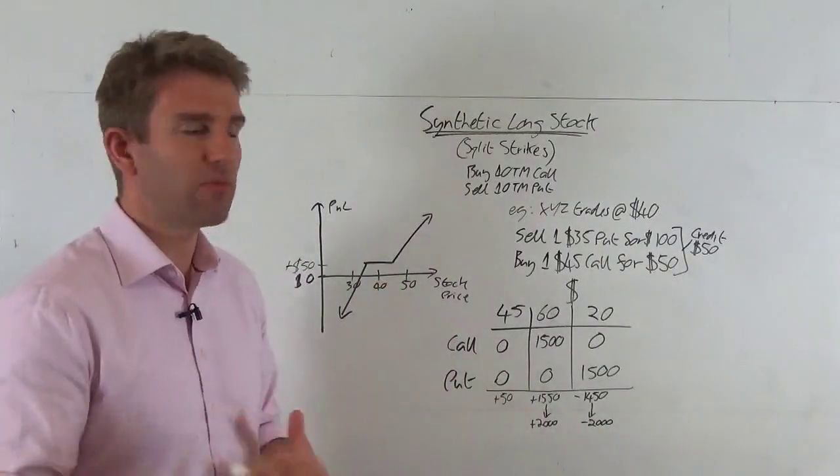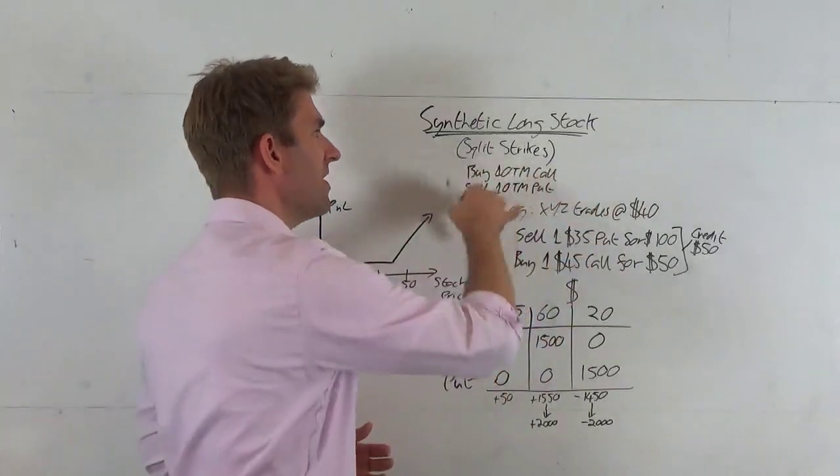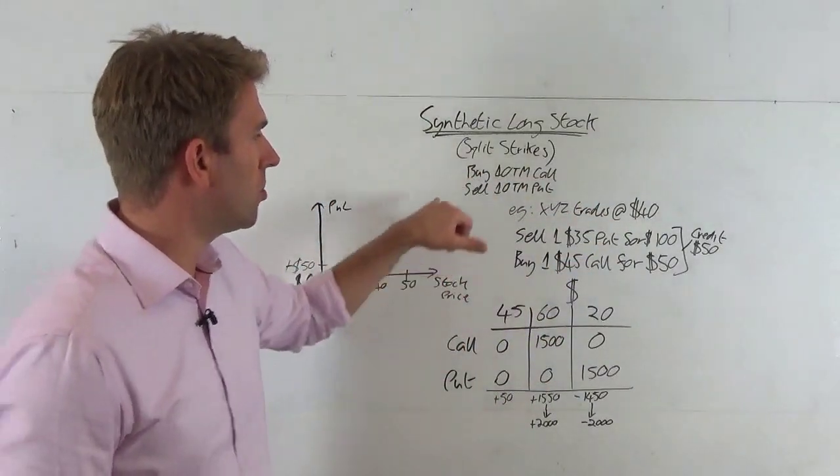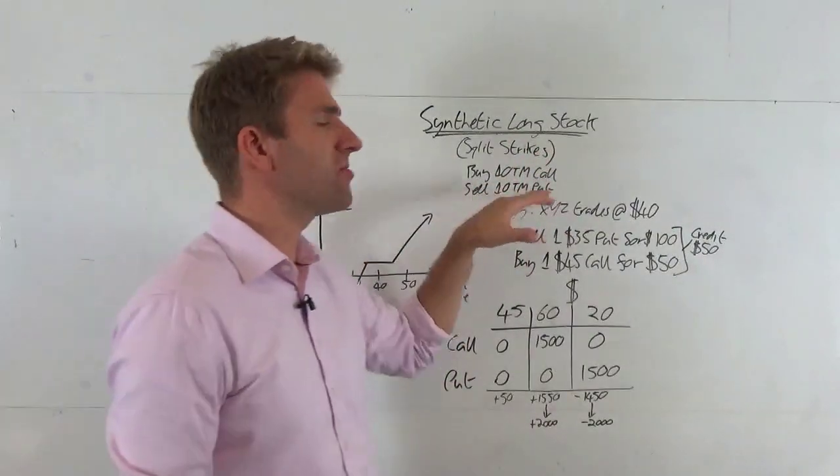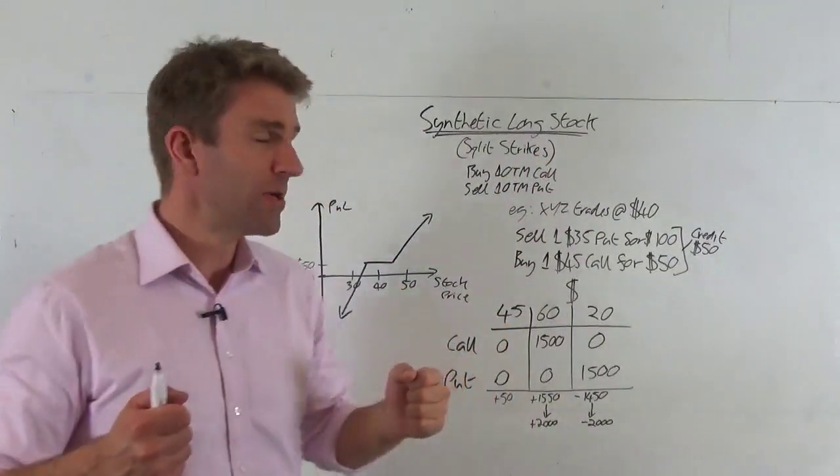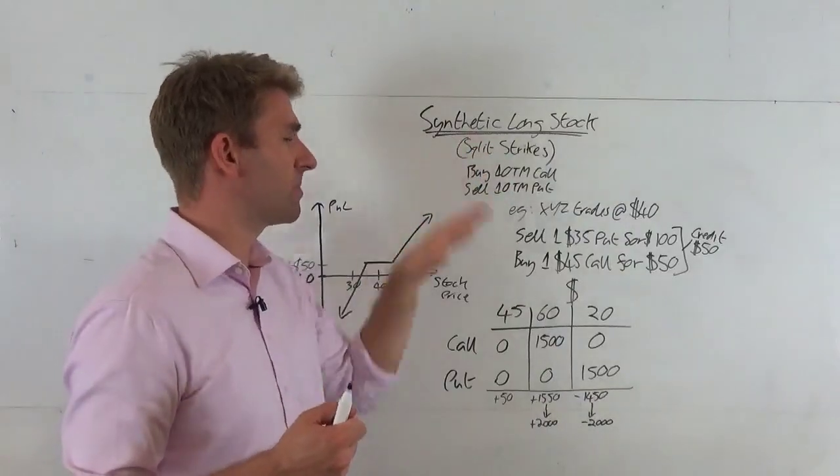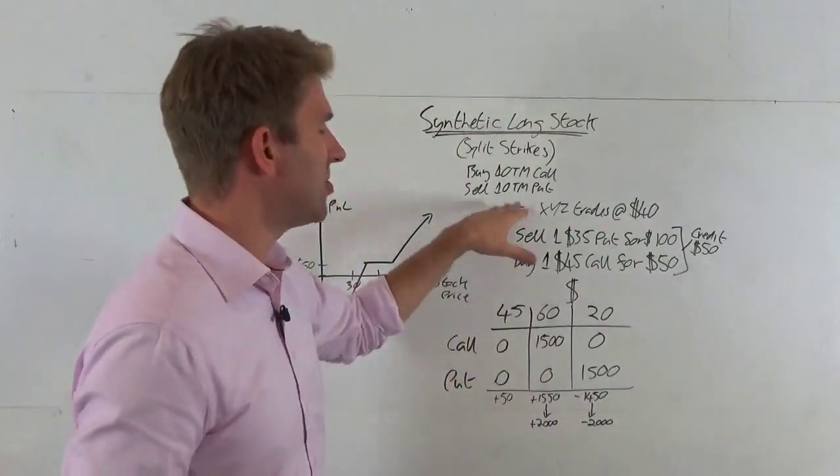To create this split strike we're buying one out of the money call and we're selling one out of the money put. That's the difference between the synthetic long with a split strike and not.